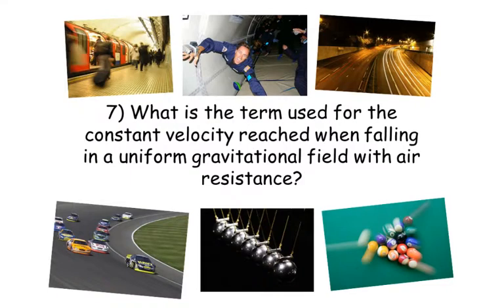Number 7. What is the term used for the constant velocity reached when falling in a uniform gravitational field with air resistance?